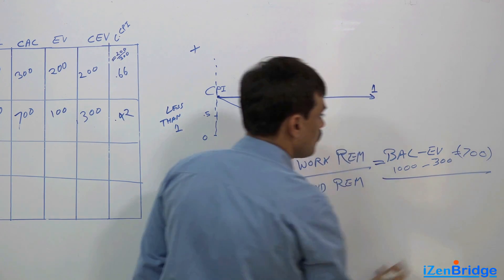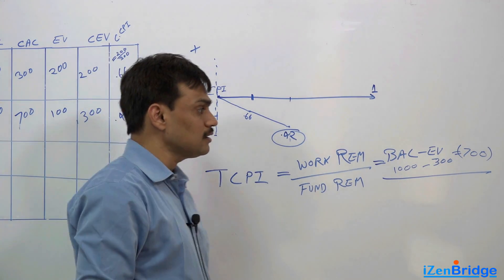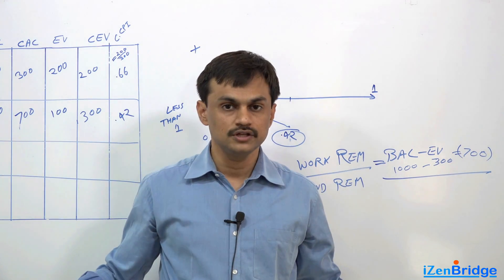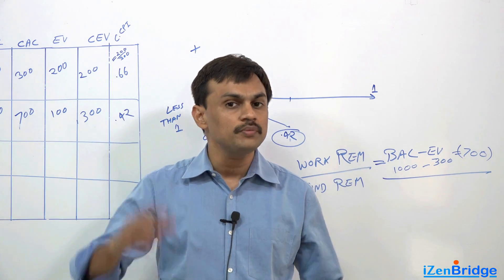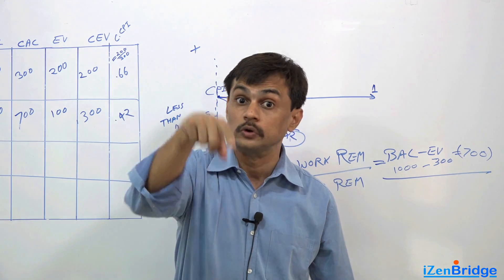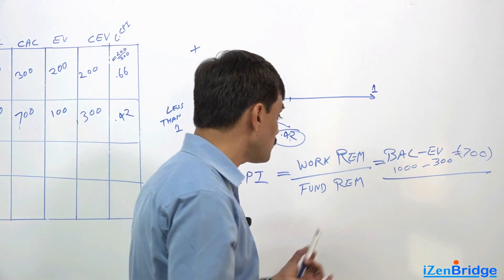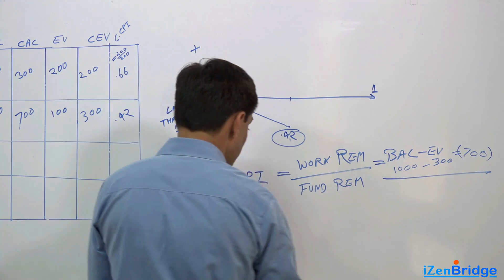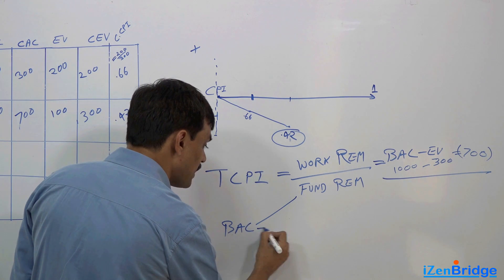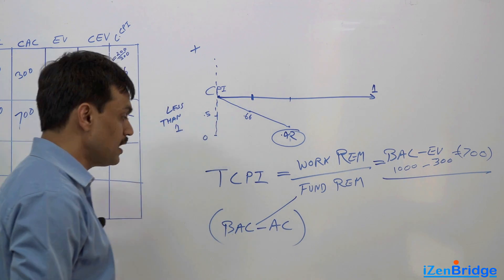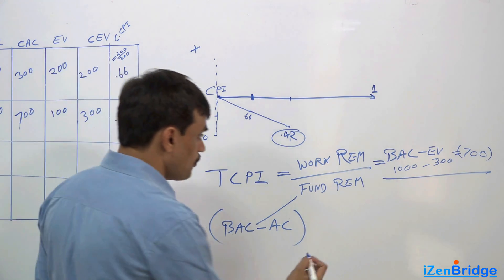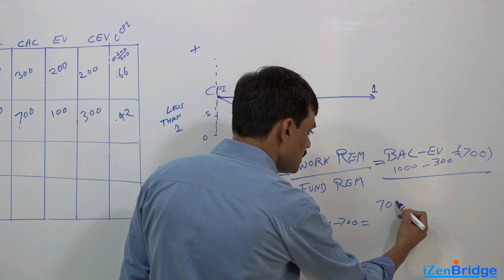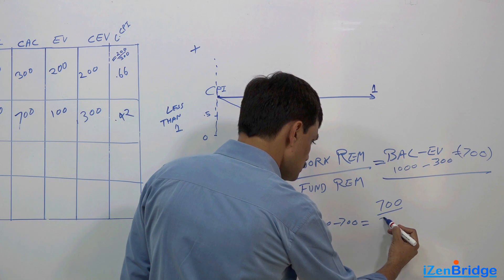Now what is fund remaining? Now fund remaining - one is that we had a budget at completion of $1000. So if we say there is no revision, there is no estimate at completion, you just need to make sure that you get the work done in $1000 only. If we get that information from management, then our fund remaining is $1000 minus $700. So one way of calculating fund remaining is Budget at Completion minus Actual Cost.